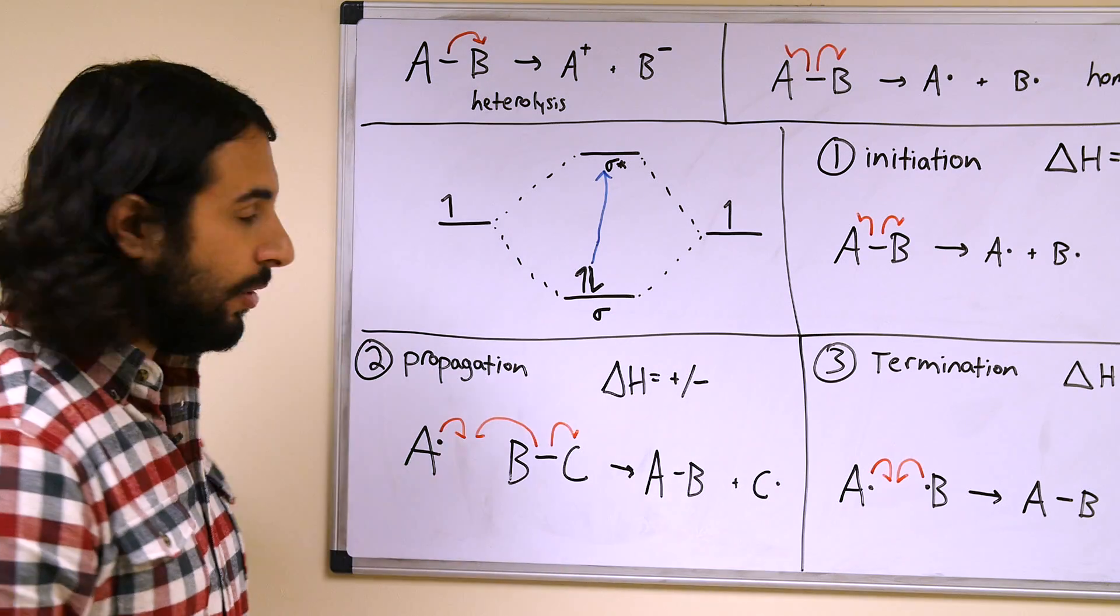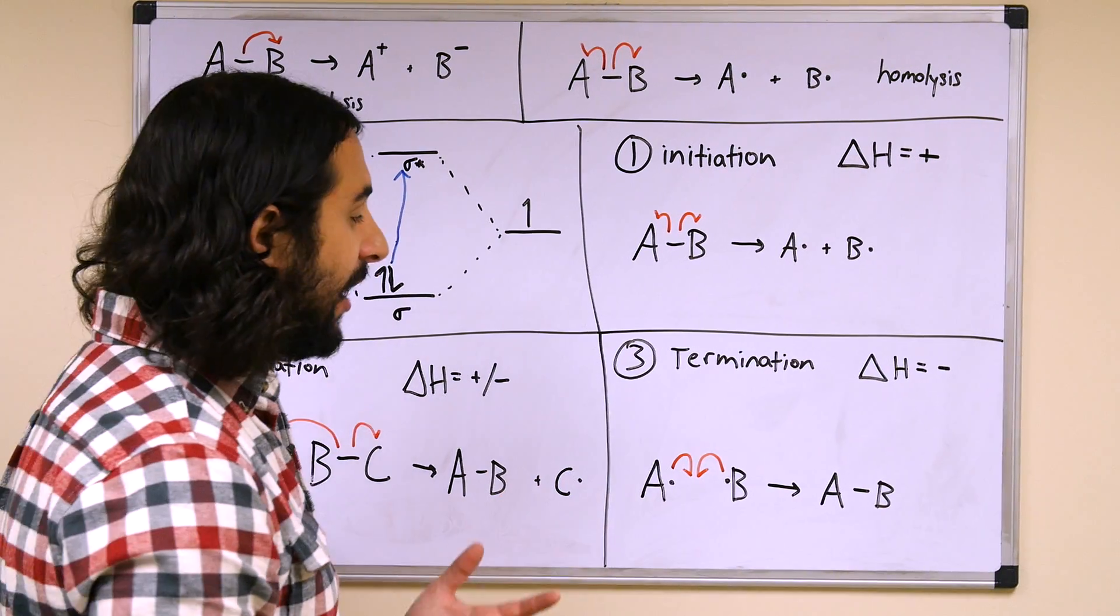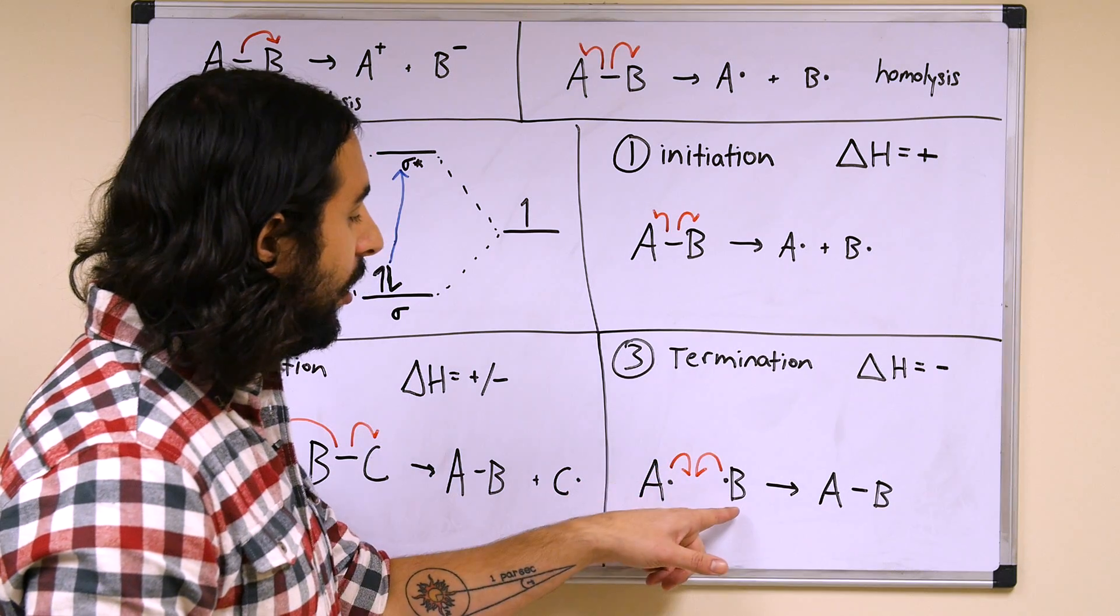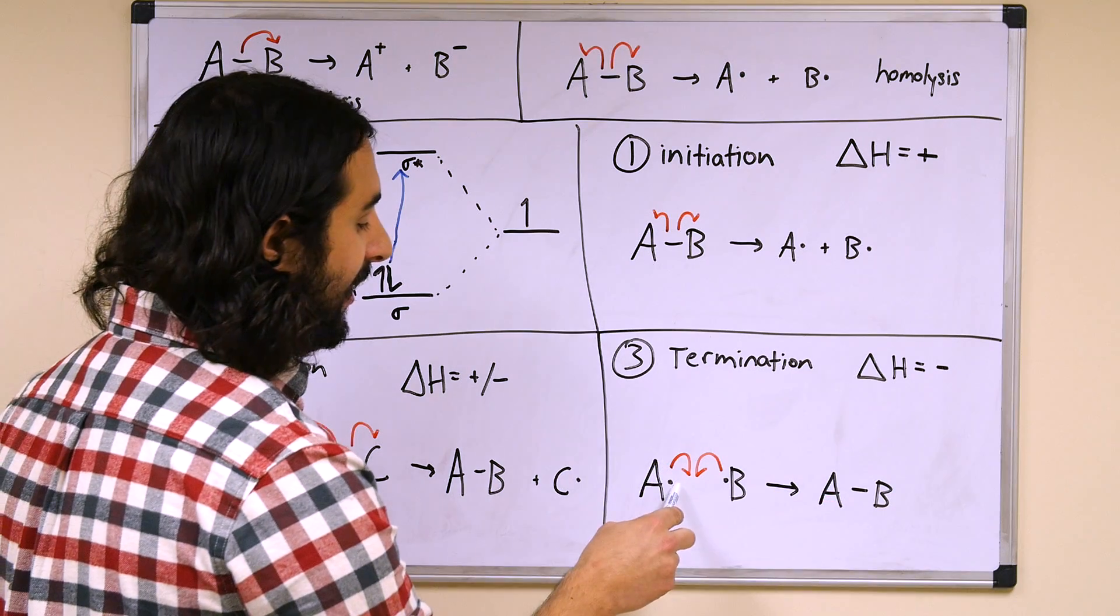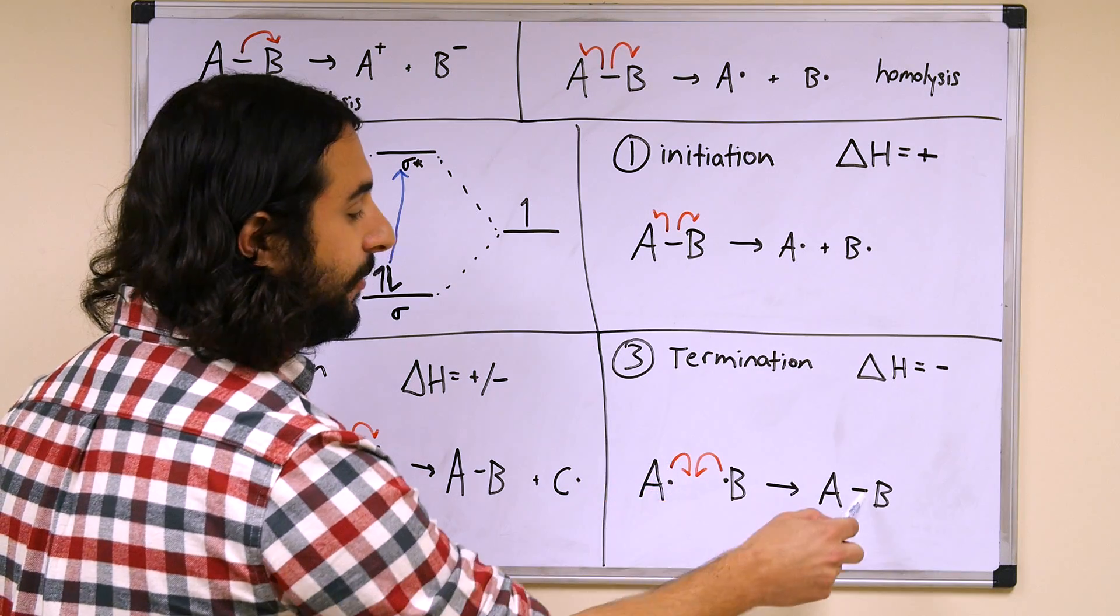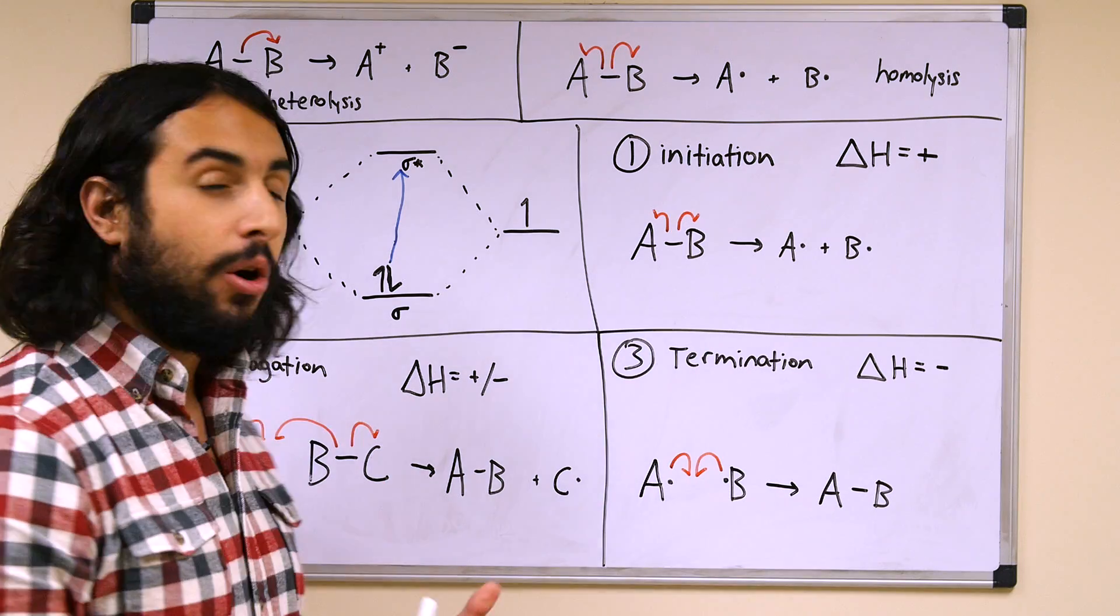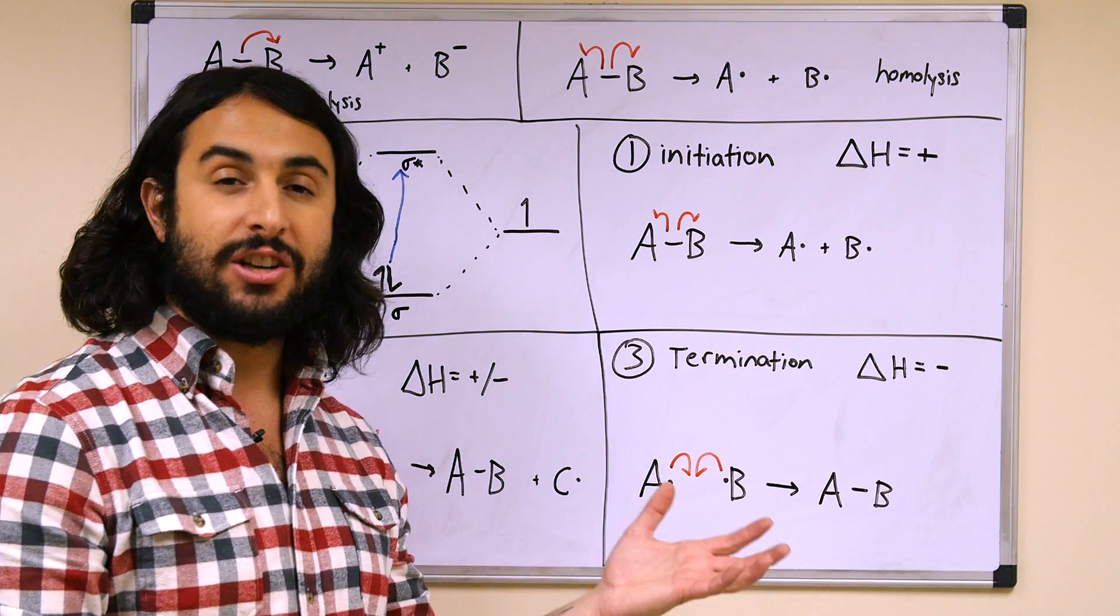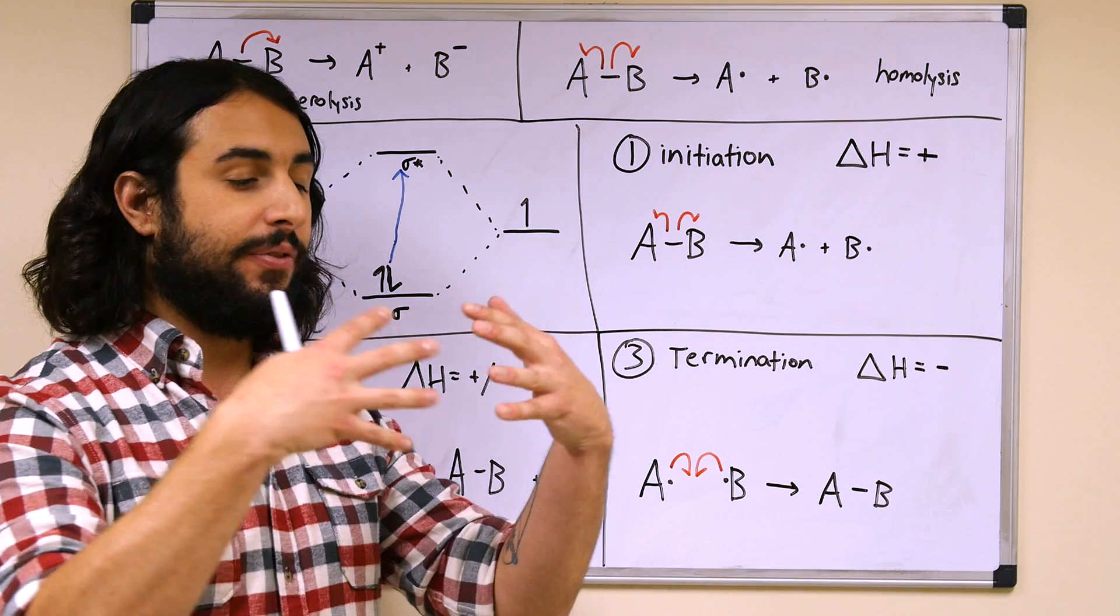Then lastly, there's going to be a termination step typically, or at least that's what radicals can do. And so this is a situation where two radicals go to form a single covalent species. So here we can see the electron that is the radical from each species going together to form this covalent bond. This is essentially the reversal of the initiation step, although it need not be the two species that generated the radicals in the initiation step. Basically any two radicals, be they halogen, alkyl, or what have you, if they generate a covalent bond between them, that would be considered a termination step.